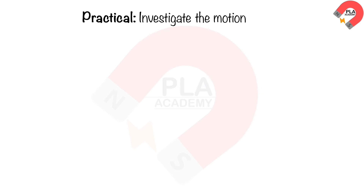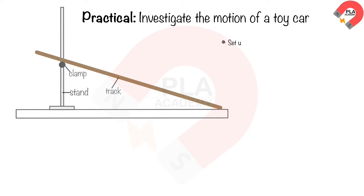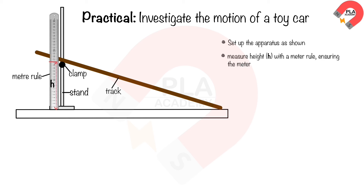Investigate the motion of a toy car: this experiment explores the relationship between the height h of a wooden track and the average speed of a toy car traveling down it. Begin by setting up the apparatus as shown. Securely clamp the wooden track at the desired height h. Measure the height with a meter rule, ensuring the meter rule is perpendicular to the bench — use a set square to check this.